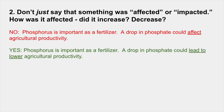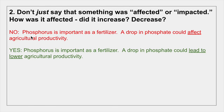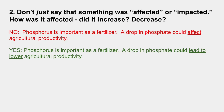Number 2: don't just say that something was 'affected' or 'impacted' — specify how. Did it increase or decrease? For example, saying 'a drop in phosphate could affect agricultural productivity' is meaningless — is it positively or negatively affecting it? Just saying something is 'affected' or 'impacted' conveys nothing. You need to say 'a drop in phosphate could lead to lower agricultural productivity.'